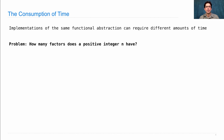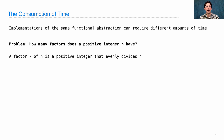Let's look at an example. How many factors does a positive integer n have, where a factor is some number k that evenly divides n? So 6 has the factors 1, 2, 3, and 6.